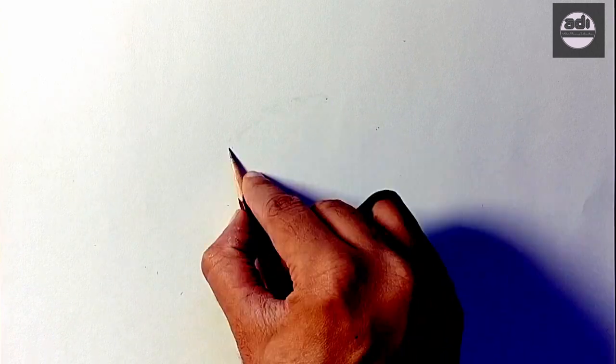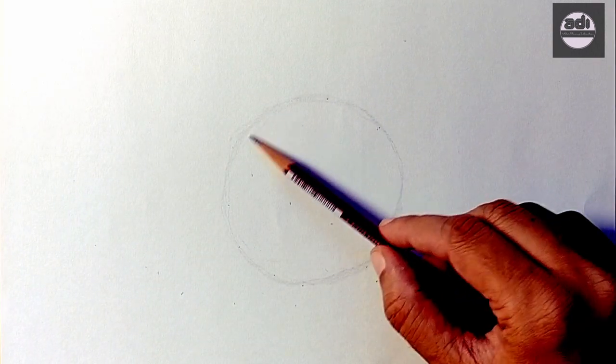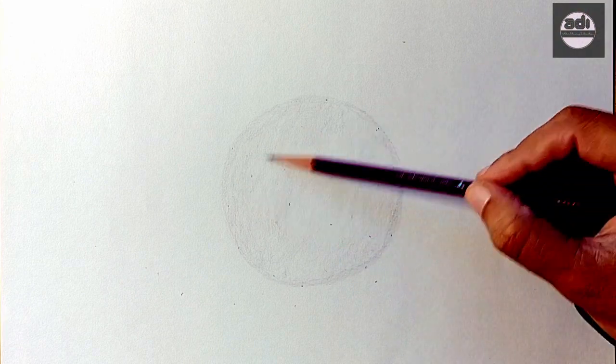For your assignment, you will draw a circle and shade it evenly with the 2H pencil. Then using your kneaded eraser, you will pick out a highlight.